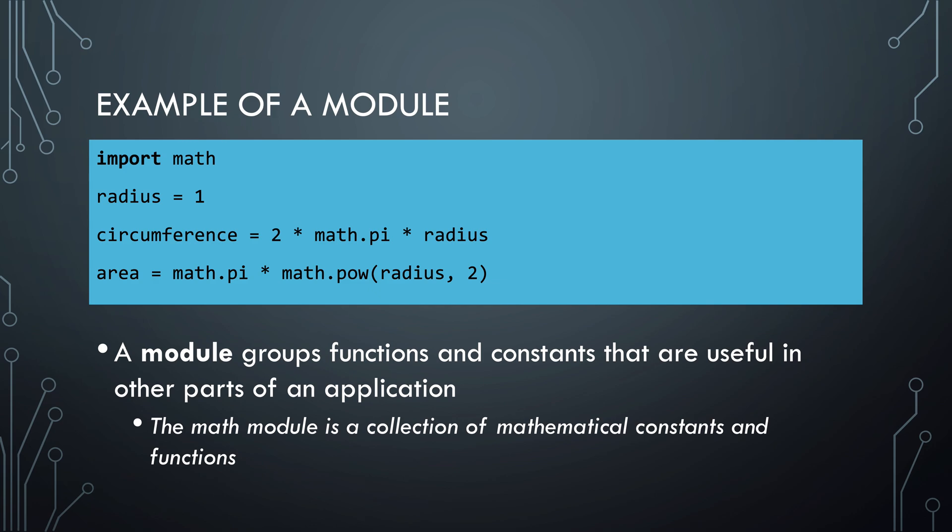Another level to structure code is by putting related functions into modules. You can create your own modules in Python, but Python also has a large number of built-in modules. For example, the math module groups mathematical constants and functions. Here you can already see that many design choices have been made. An example of such a choice is that math contains all mathematical functions. The creators of Python could have also decided to split this into several modules instead: Algebra, Geometry, Numerical Analysis, and so on.